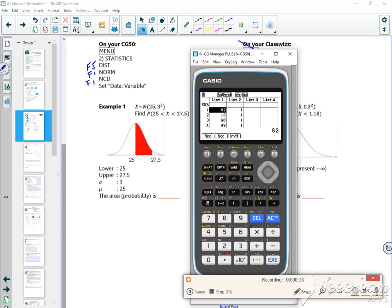So I'm looking at, it's between 25 and 27 and a half. So my upper is 25, my lower is 27 and a half. So it's an MCD, make sure it's on variable. So my lower is 25, my upper is 27 and a half.